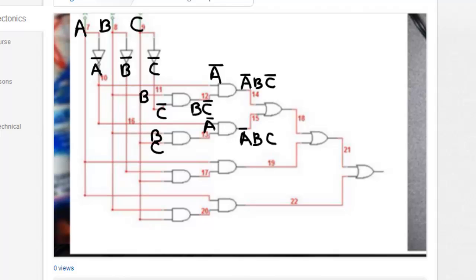And then over here I have A, and I have NOT B, and I have C. So this is A and NOT B and C.